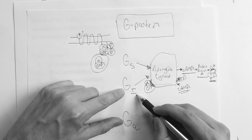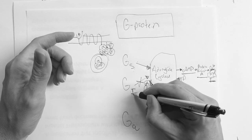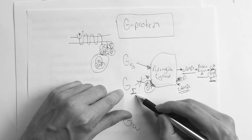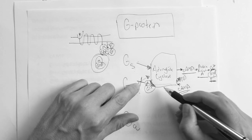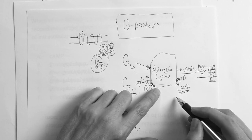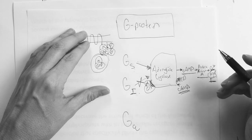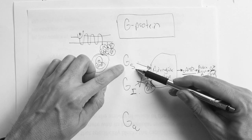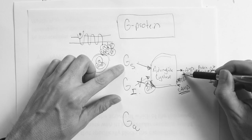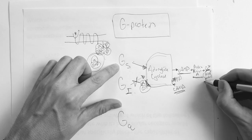For G-inhibitory, it just cuts that pathway off — it stops it. So if it's G-inhibitory, adenylate cyclase is blocked, cyclic AMP goes down, protein kinase A goes down. It's simple: G-stimulatory activates adenylate cyclase, increases cyclic AMP, increases protein kinase A, increases calcium and the target protein. G-inhibitory shuts that whole pathway down.